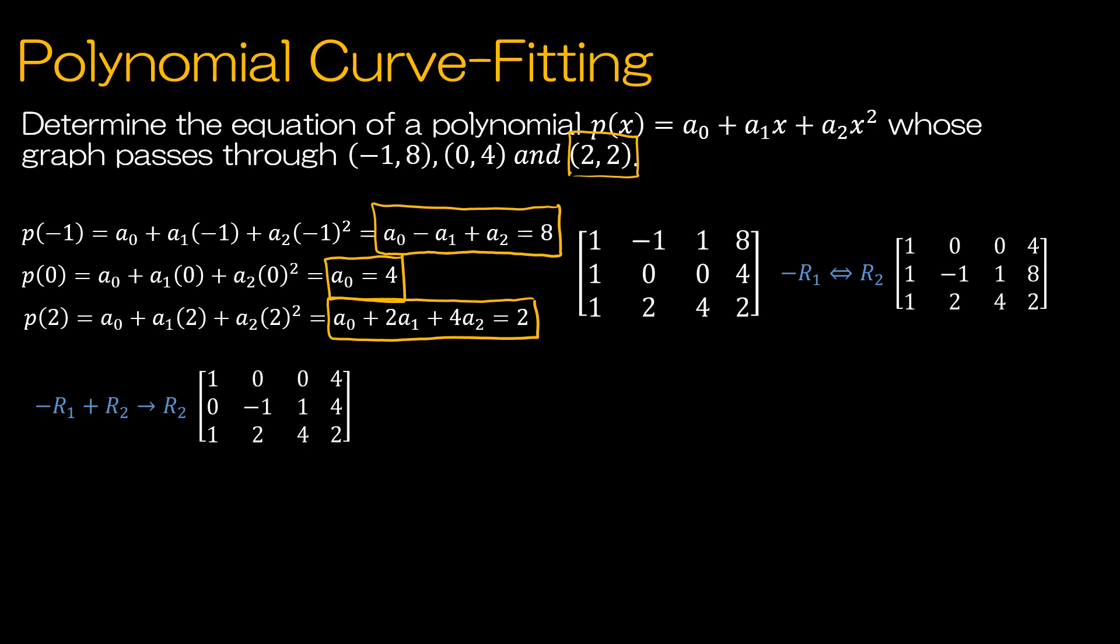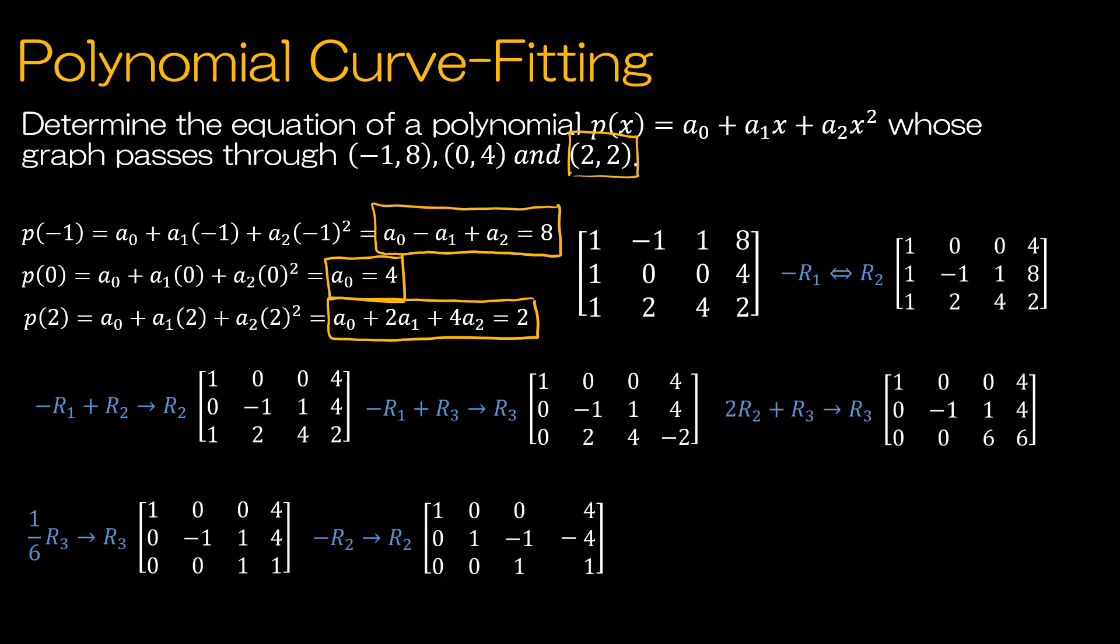I'm going to swap row 1 and row 2. Negative row 1 plus row 2 is row 2. I'm not going to focus so much on the math here because our last two videos were very long and focused on how to get this into reduced row echelon form. Through all that math, I've arrived at reduced row echelon form: 1, 0, 0, 4, 0, 1, 0, negative 3, 0, 0, 1, 1.